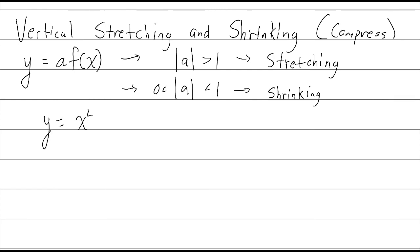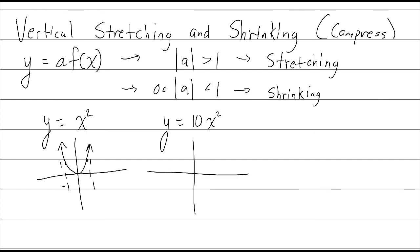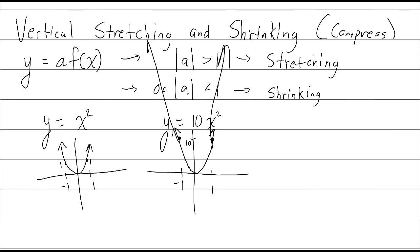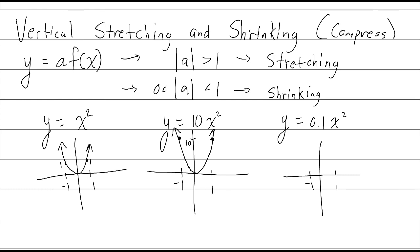For example, with y equals x squared: at x equals negative 1 and x equals 1, y equals 1. With y equals 10x squared, those same x values give y equals 10 — the graph is much taller, stretched. With y equals 0.1x squared, those same x values give y equals 0.1 — the graph is much flatter, compressed.